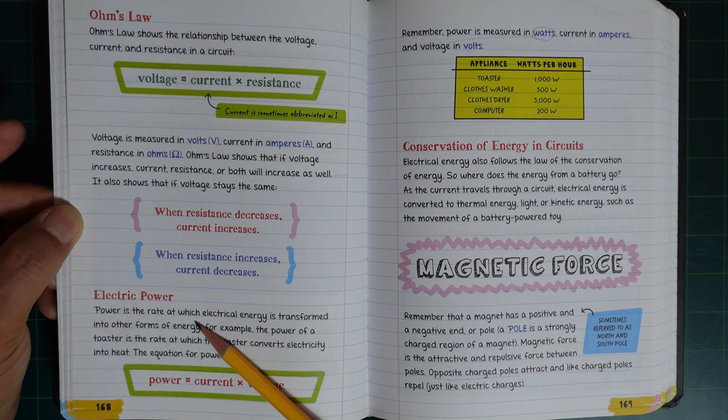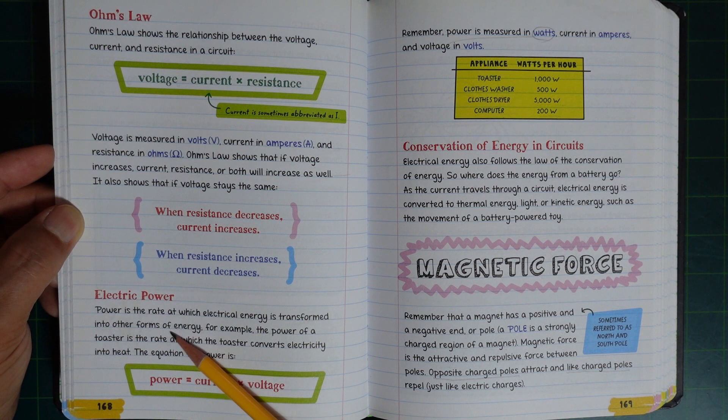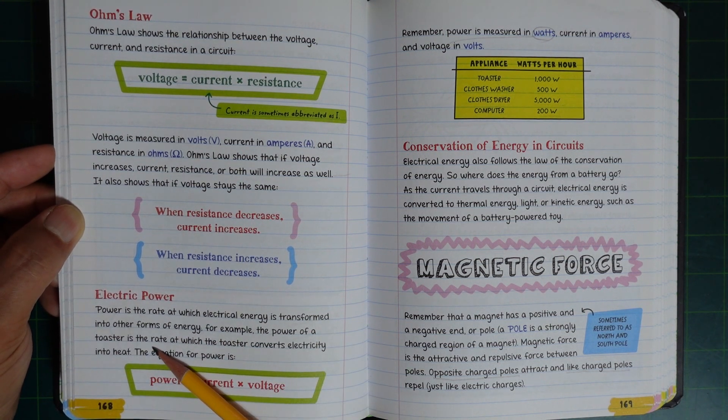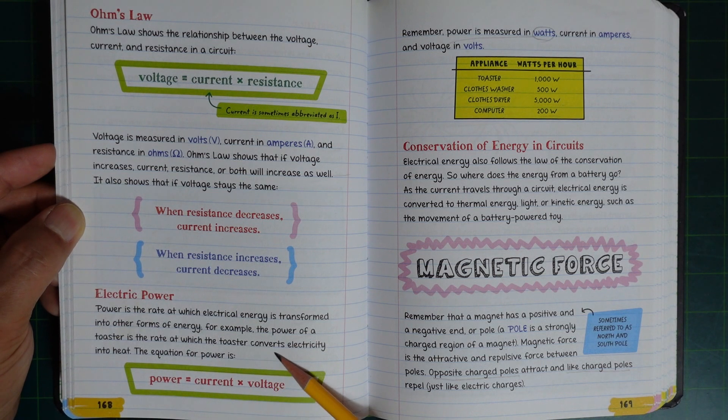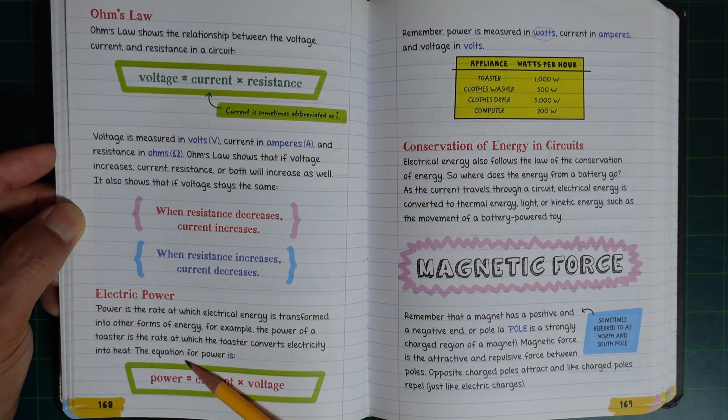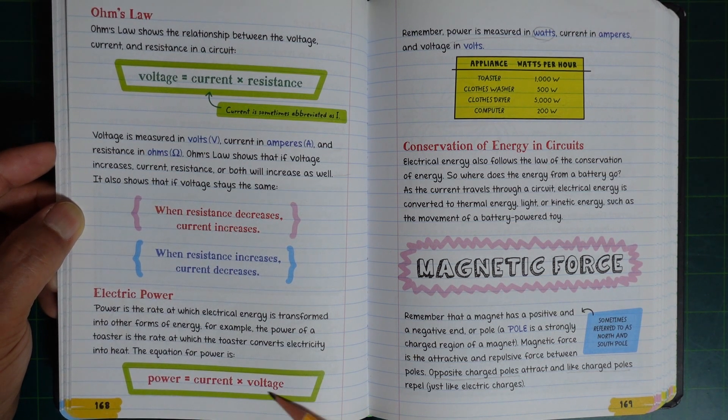Electric power is the rate at which electrical energy is transformed into other forms of energy. For example, the power of a toaster is the rate at which the toaster converts electricity into heat. The equation for power is power equals current times voltage.